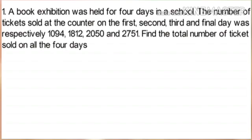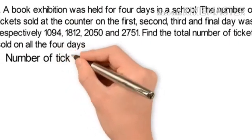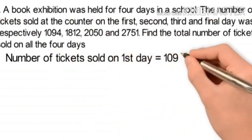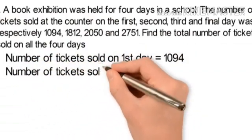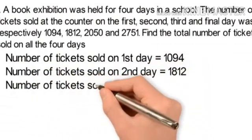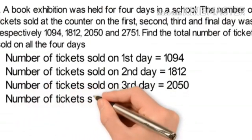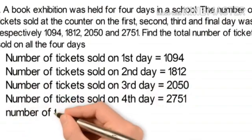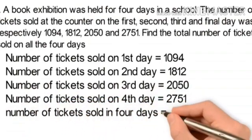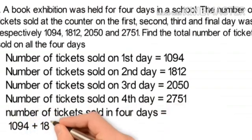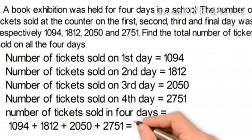Number of tickets sold on first day equals 1094. Number of tickets sold on second day equals 1812. Number of tickets sold on third day equals 2050. Number of tickets sold on fourth day equals 2751. Therefore, the total number of tickets sold in four days equals 1094 + 1812 + 2050 + 2751, and the answer is 7707 tickets.